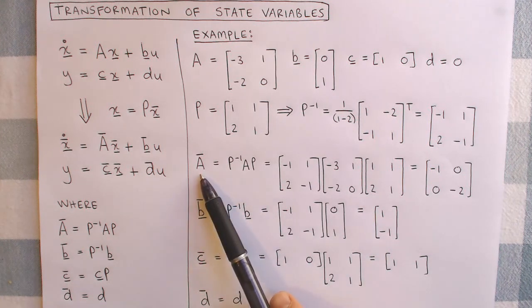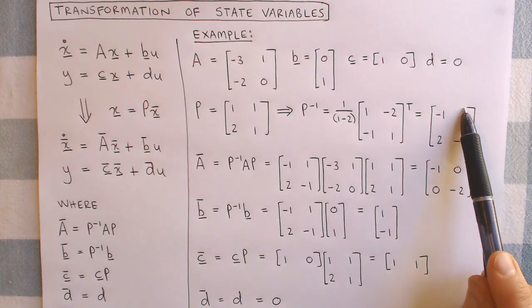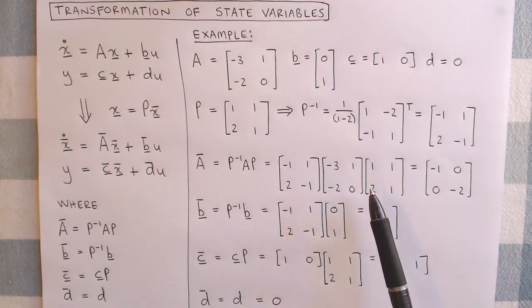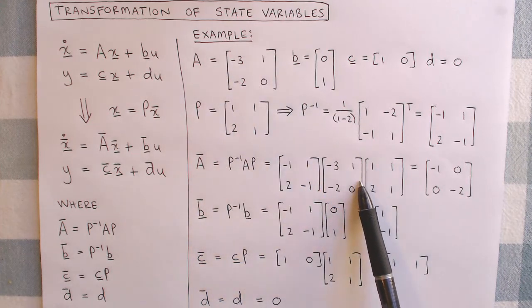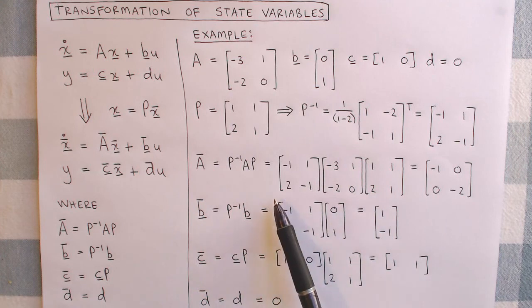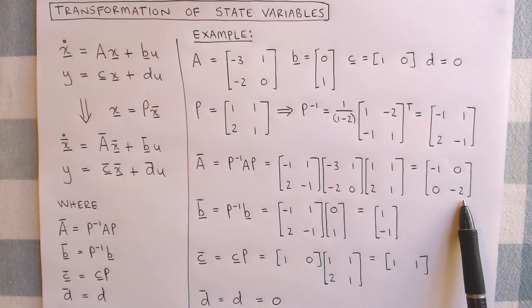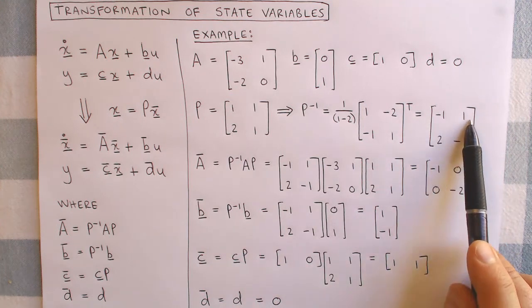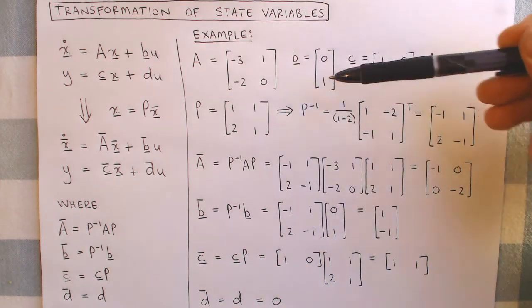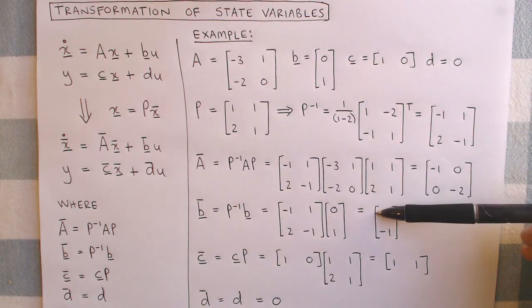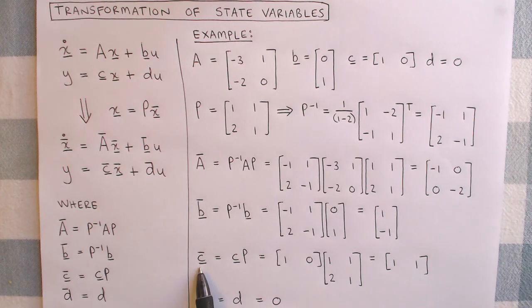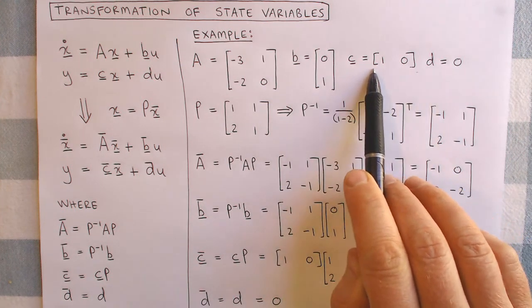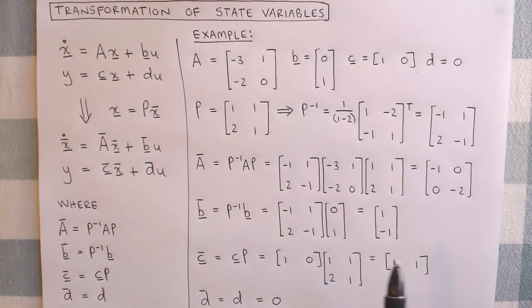The new A matrix, A-bar, is given by the inverse of the transformation matrix times the old A matrix times the transformation matrix, and after multiplying these matrices together, we get this matrix. The new B vector is given by the inverse of the transformation matrix times the old B vector, and this results in the following column vector. The new C vector, C-bar, is given by the old C vector times the transformation matrix, which results in this row vector.